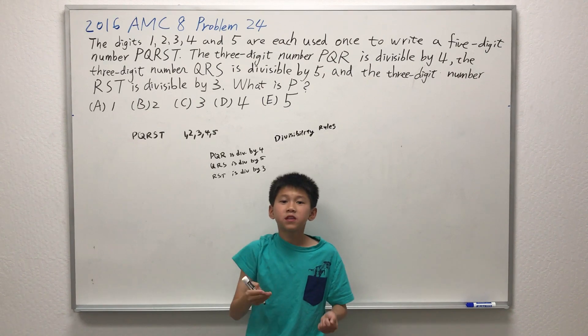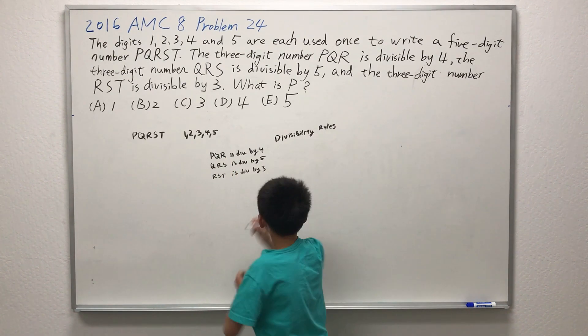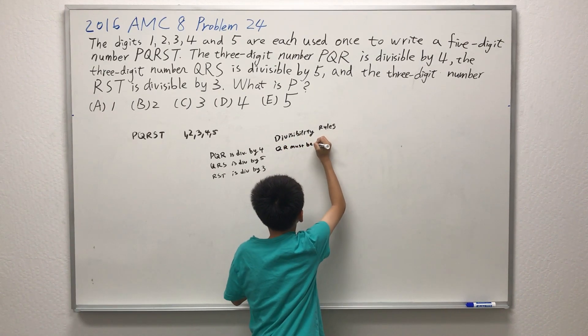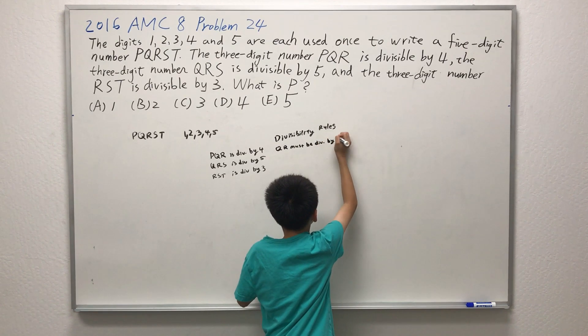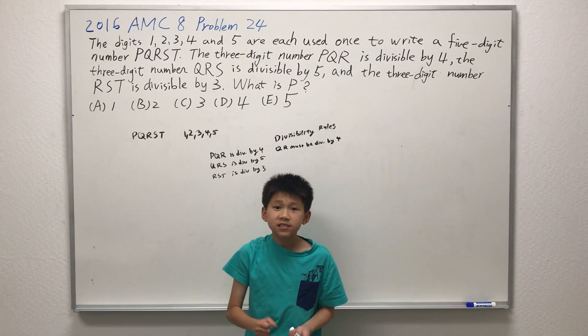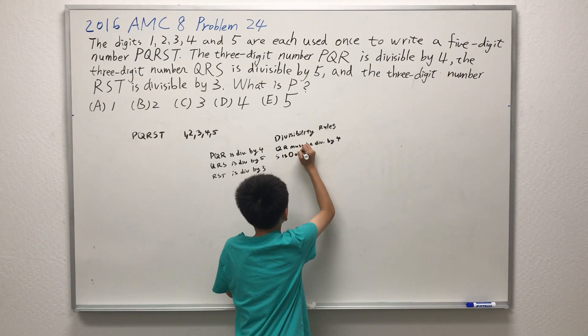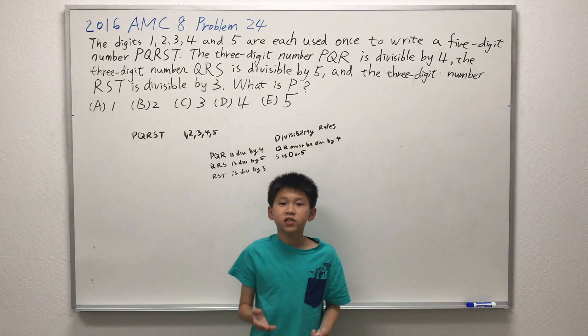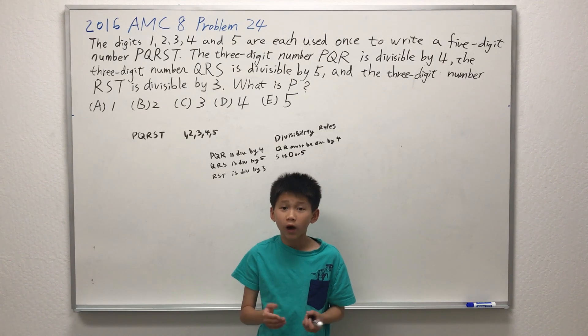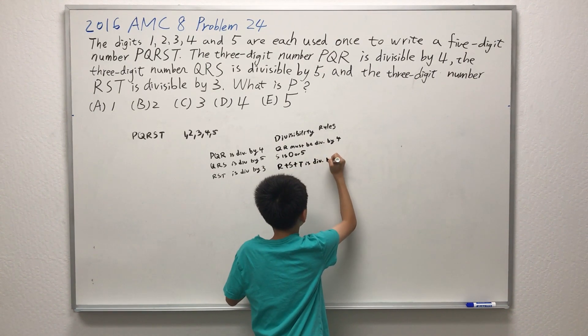For a 3-digit number to be divisible by 4, that means the last 2 digits of the number, in this case QR, must be divisible by 4 as well. For QRS to be divisible by 5, that means S has to either be 0 or 5. And for a 3-digit number to be divisible by 3, that means the sum of the digits has to be divisible by 3 as well. So R plus S plus T is divisible by 3.